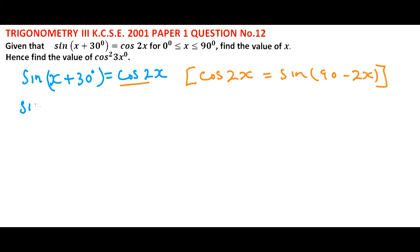So you have sine x plus 30 is equals to sine 90 minus 2x. We get the inverse sine, so the sine cancels. We have x plus 30 degrees is equals to 90 minus 2x. So bring 2x to this side and 30 to the other side.